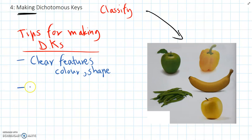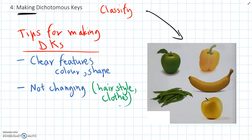The next tip is choose features that are not changing. For example, if we're classifying people, things like hairstyle and the clothes that the people are wearing, these are things that can change easily. So we don't want to pick these features.